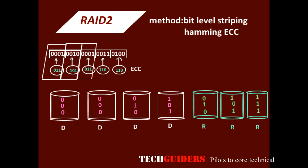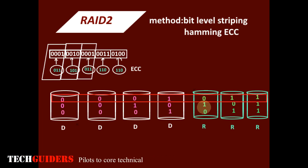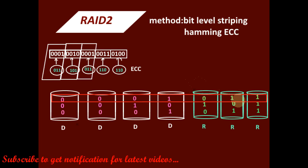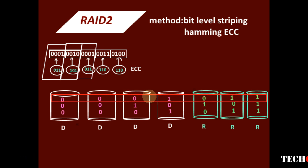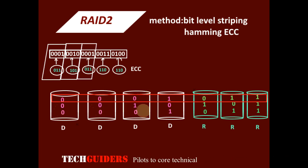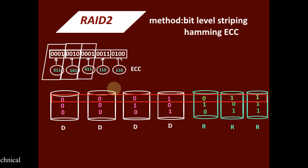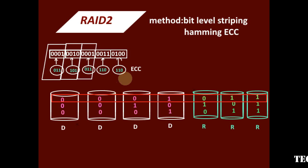While reading, the data word together with its ECC are read simultaneously, and the ECC is analyzed to check whether the data is consistent. For this, there must be proper synchronization between the disks — the disks must spin in a synchronized manner. Thus RAID 2 was hard to implement.